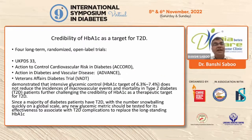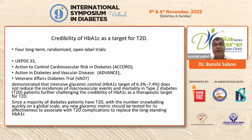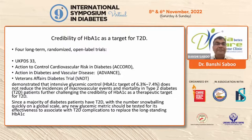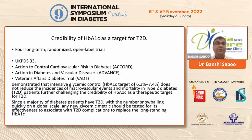The credibility of HbA1C as a target for type 2 diabetes has been challenged by UKPDS, ACCORD, ADVANCE, and VADT. These trials demonstrated that intensive glycemic control does not reduce the incidence of macrovascular events and does not decrease mortality in type 2 diabetes. Since the majority of patients with type 2 diabetes are growing rapidly on a global scale, any new glycemic metric should be tested for its effectiveness in associating with type 2 diabetes complications to complement or replace the long-standing A1C.